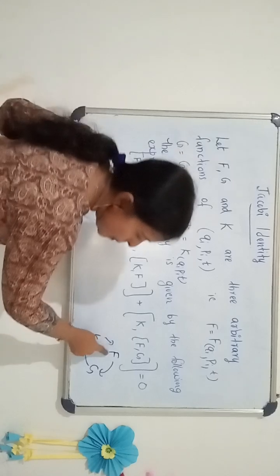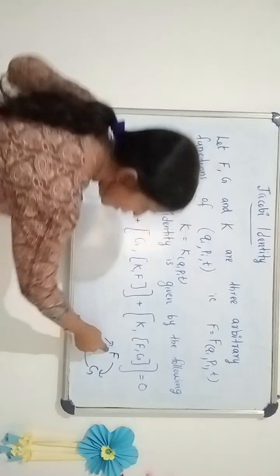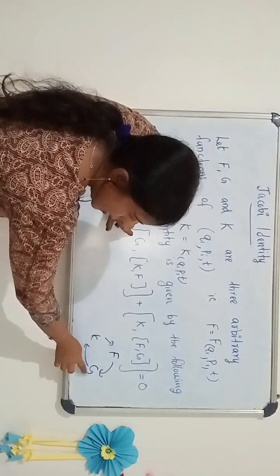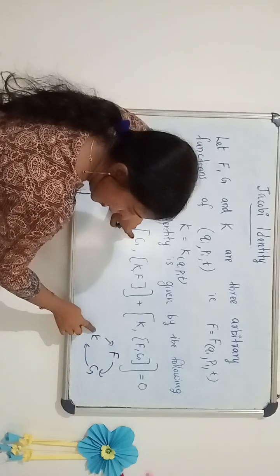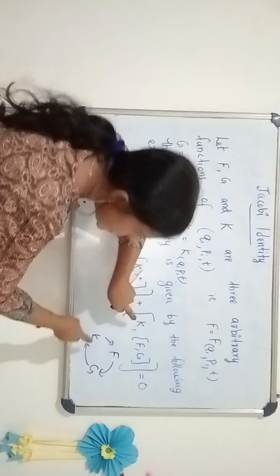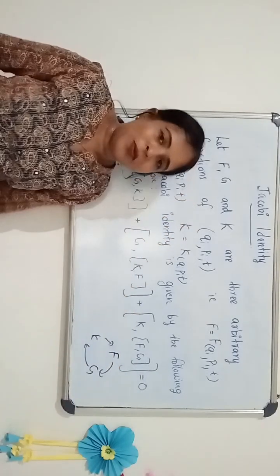F, G and K are in the clockwise direction. Then if you take F first, then the Poisson bracket are G and K. And if we take G as the first quantity, then K and F next. It is in the same order. Then if you take K first, then the Poisson bracket contains F and G which is equal to 0.